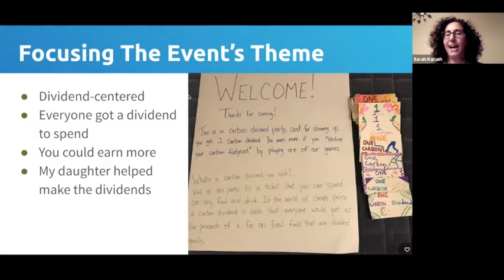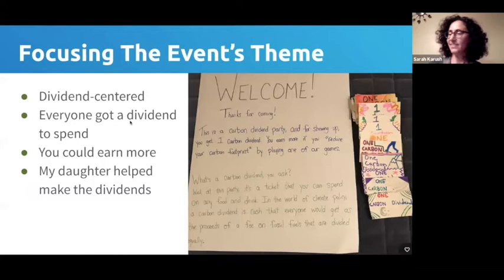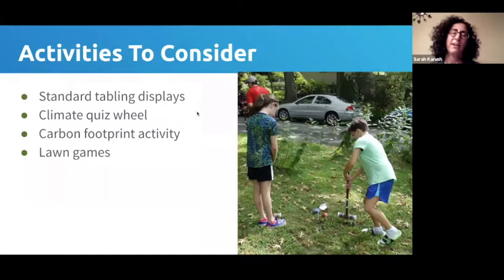For the dividends, we could have used Monopoly money, but I have a willing artist in my family — my 10-year-old daughter — so she made unique cards. For activities, we had standard tabling stuff, information about the bill, constituent comment forms, and our climate quiz wheel, which we bring to a lot of tabling events.